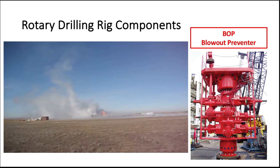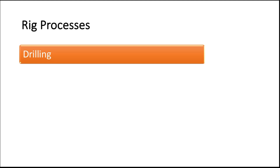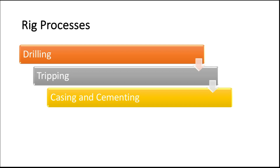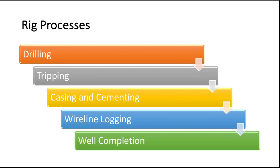To finish a well, there are some key processes to be done: drilling, running casing and cementing, wireline logging, and finally well completion — and we will discuss all of this in next videos. With this we have finished the basics of rig components. In the next video we will get into engineering calculations that will help you analyze all data on the rig. Thank you for your kind attention and I will see you next time.